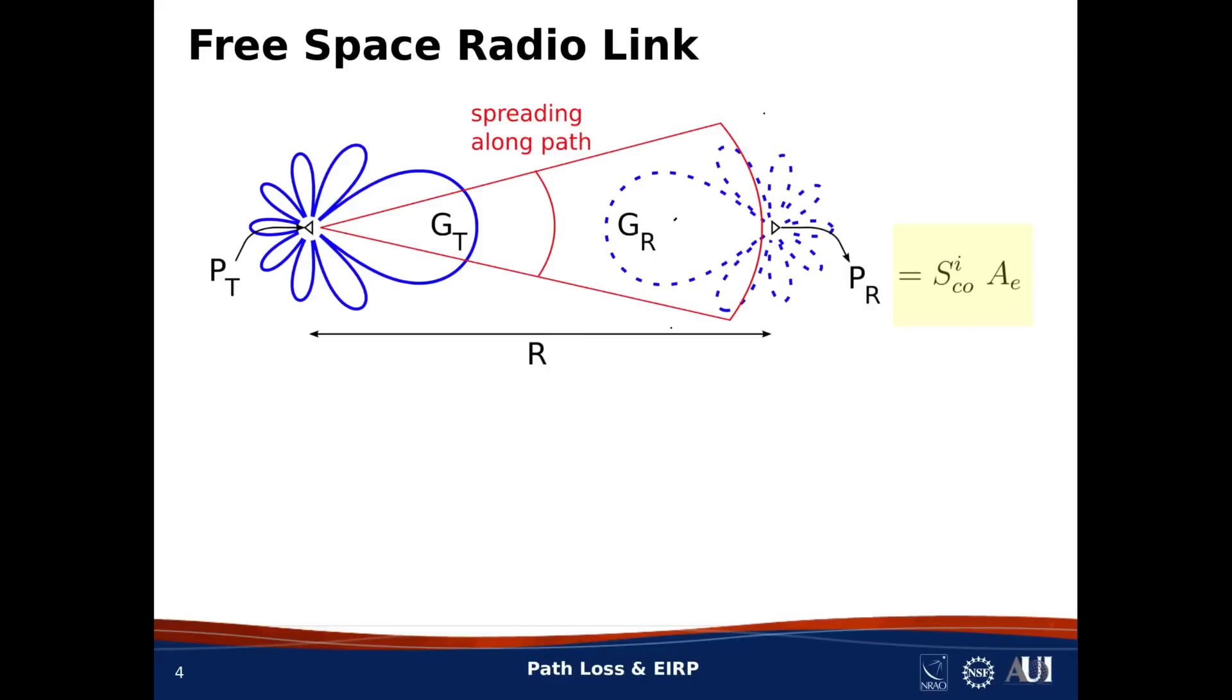The approach we're going to use is illustrated by the equation now appearing on the right side of the slide. That is, P sub R is the product of the co-polarized instant power density, S super I sub CO, times the effective aperture of the receive antenna, A sub E.